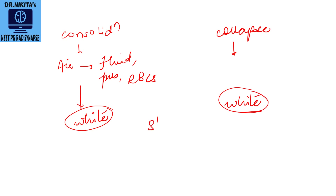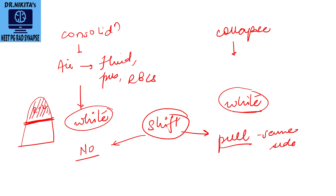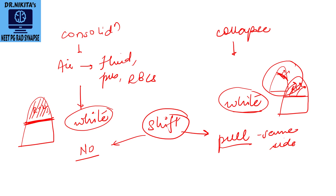How do we differentiate the two on a radiograph? By looking at the shift of surrounding structures. In consolidation there is no mass effect, so there will be no shift. In collapse, because of volume loss, it pulls structures towards it — same-side shift. For example, in right upper lobe collapse the horizontal fissure gets pulled upward. In consolidation the trachea stays central; in collapse the trachea is pulled towards that side.